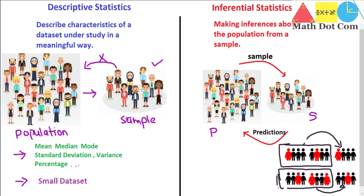Another important requirement for the sample is that it should be large — large enough to easily represent the population. So there are two things that are very important in inferential statistics: one is the representative sample and the other is the large sample, so that you can easily make predictions about the larger population. In case of descriptive statistics, such restrictions were not there. This is the main basic difference between descriptive and inferential statistics.